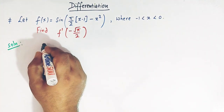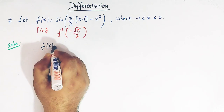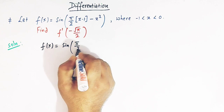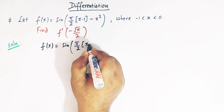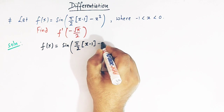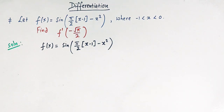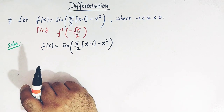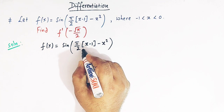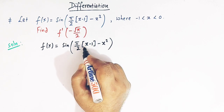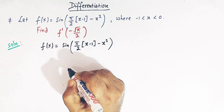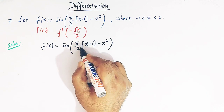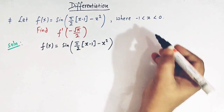We are given f of x equal to sin of pi by 2 times greatest integer of x minus 1, minus x squared. Before differentiating this function with respect to x, we have to take care of the quantity greatest integer of x minus 1. So let us first assign a value to this quantity.